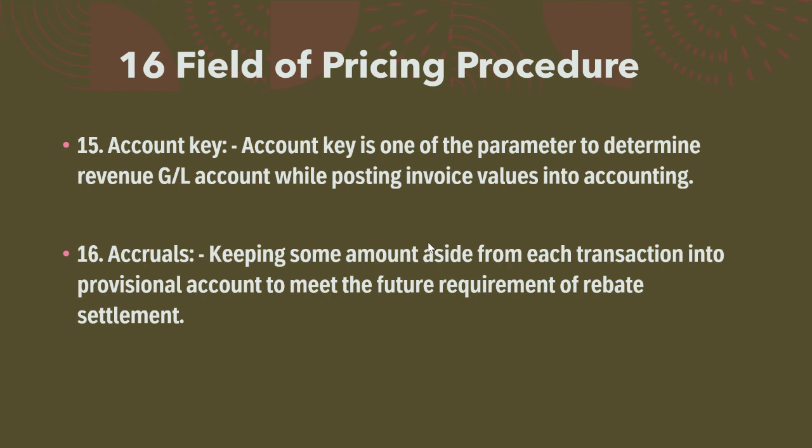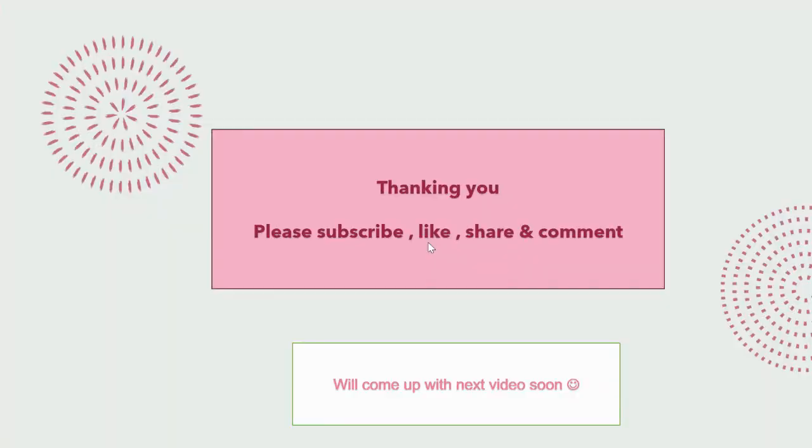The sixteenth field is Accruals. Accruals is mainly used in rebate settlement. It means we are keeping some amount aside from each transaction into a dummy or provisional account to meet the future requirement of rebate settlement. These are the 16 fields used in the pricing procedure.